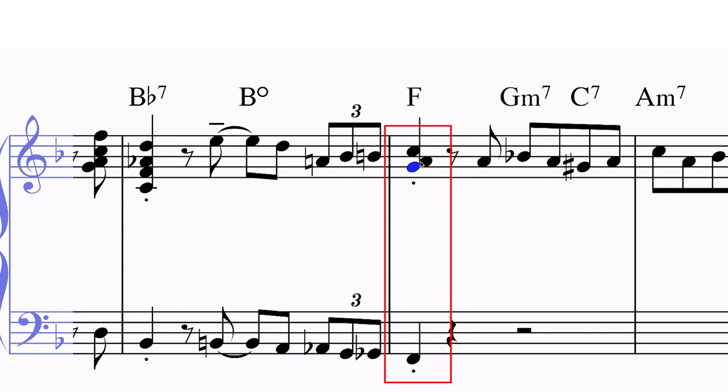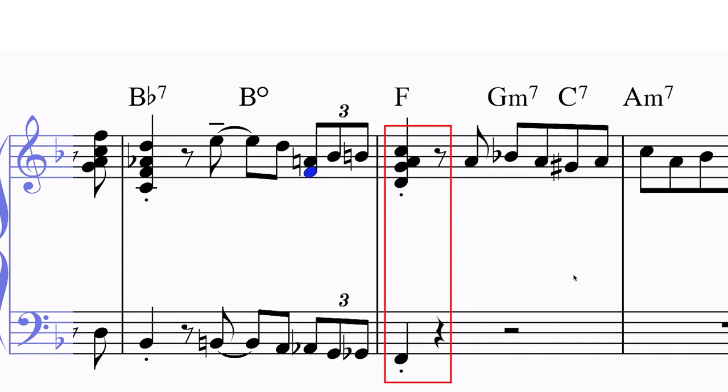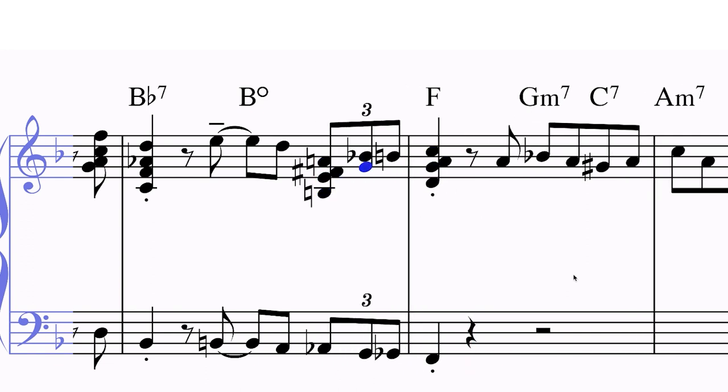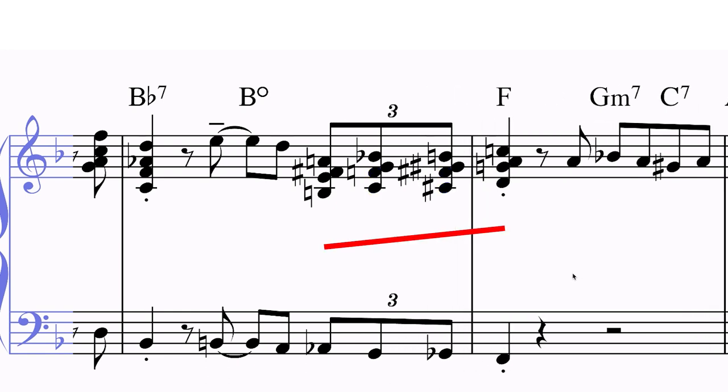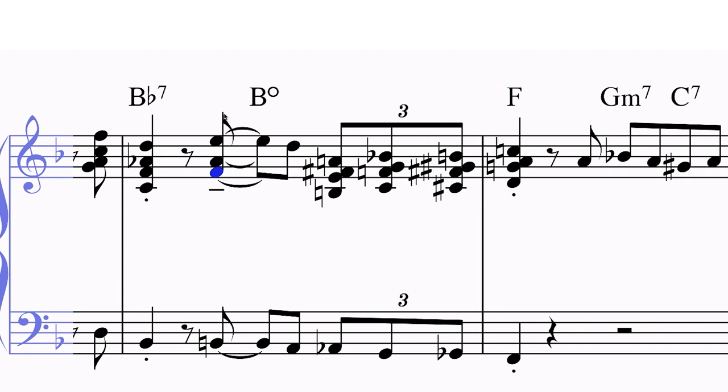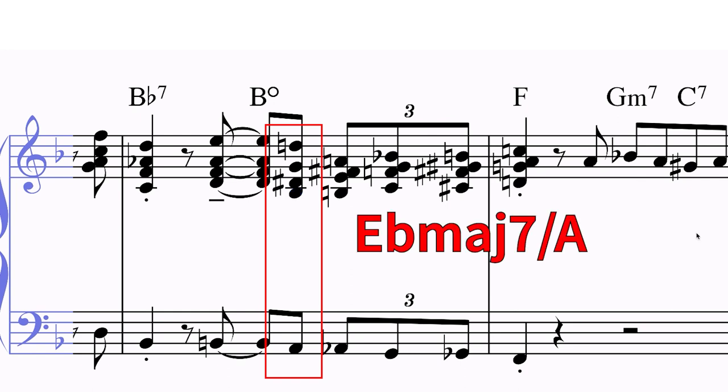For the inner parts, I'll harmonize the target chord first, then I'll fill in the melody by just approaching the target chord chromatically for each line. Then the B diminished. That leaves just this chord to fill in. That's a slightly odd chord, E flat major 7 over A. But the voice leading is nice.